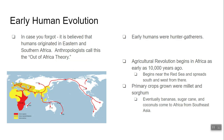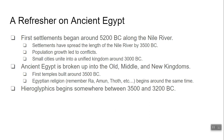What were they growing? Something called millet, something called sorghum. Eventually bananas, sugarcane, and coconuts were brought to Africa from Southeast Asia and India.